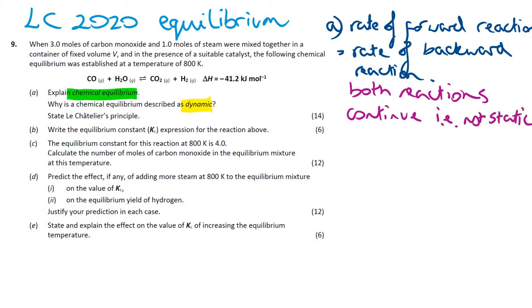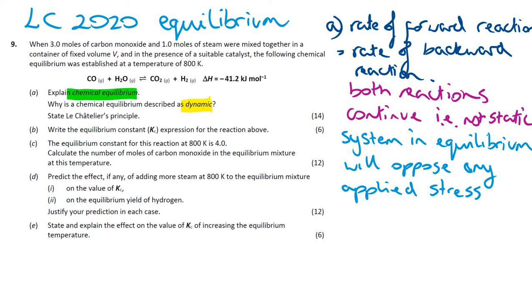State Le Chatelier's principle. For Le Chatelier's principle, you have to have a system in equilibrium. If you have a system in equilibrium, the system will react to oppose any applied stresses — that's a change in conditions like temperature, pressure, or concentration. The easiest way to answer this is: when you have a system in equilibrium, the system reacts to oppose or minimize any stress on the system. If you write 'oppose any change in conditions,' you have to label those conditions: temperature, pressure, concentration.